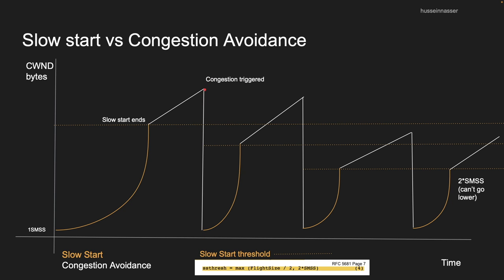Once congestion is detected — meaning the transmission timer expired and packets were dropped — we go back down to one MSS. That really hits hard in your application; your transmission window drops back to one MSS, roughly 1500 bytes based on your MTU. Then we also reduce the threshold by taking however many in-flight packets were unacknowledged and dividing by two, then start over.